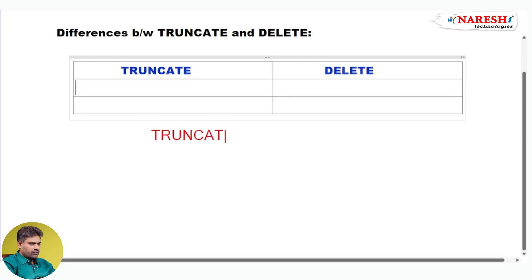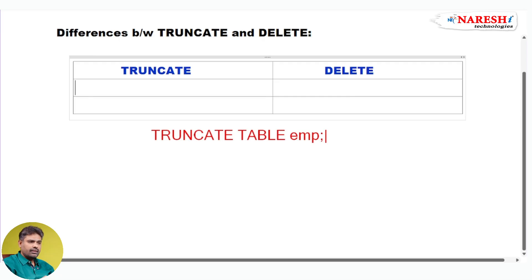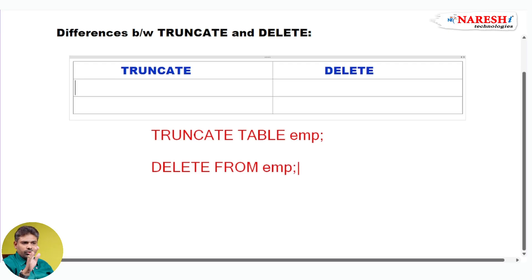Interviewers may ask like this. TRUNCATE TABLE EMP — if you write like this, it deletes all rows from the EMP table. If you write DELETE FROM EMP or DELETE EMP, it also deletes all rows from the EMP table. Then, what are the differences?